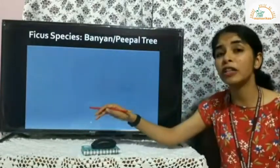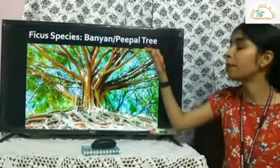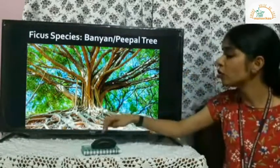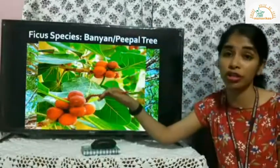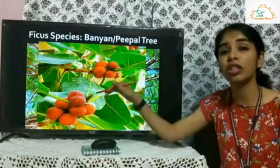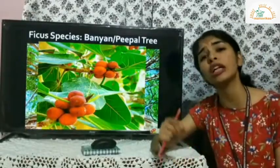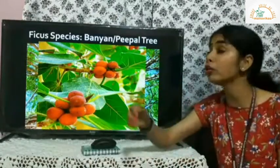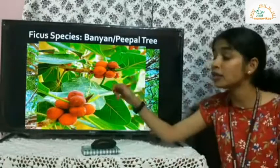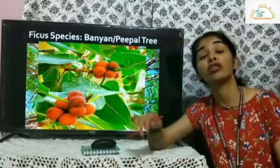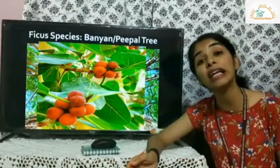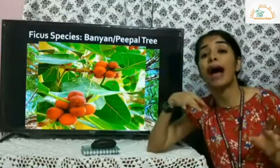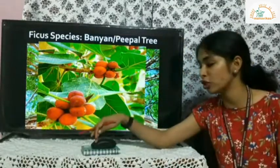Finally, ficus species like the banyan or peepal tree are also a type of keystone species. These trees produce tiny berries and many animals — birds, monkeys, snakes — depend on them. A particular type of wasp lays eggs inside these figs, and the eggs hatch and develop into larvae inside the berries. If these trees are completely destroyed, those wasps and insects will also be completely destroyed. Every organism plays an important role, but some single organisms balance everything — those are known as keystone species.